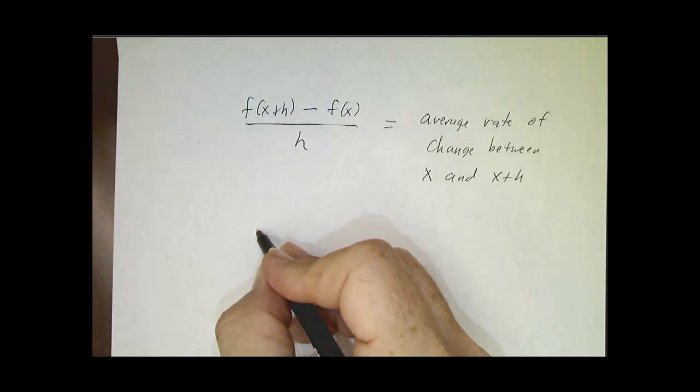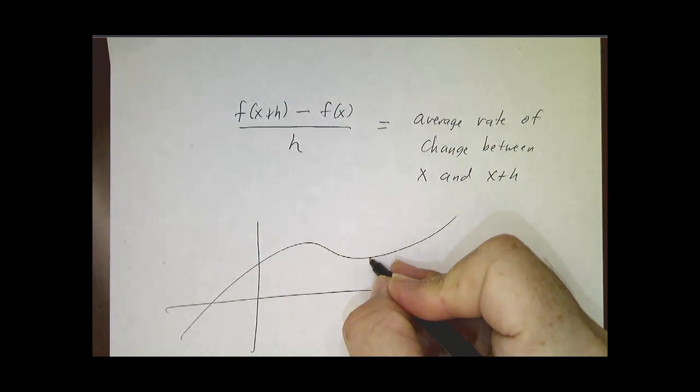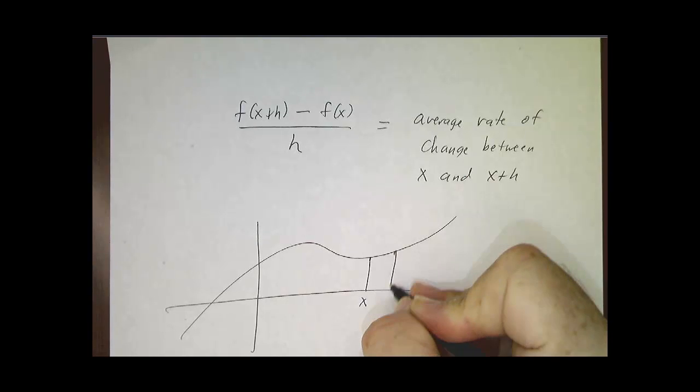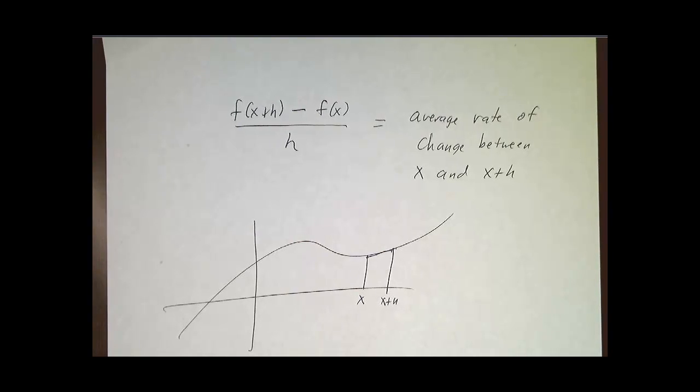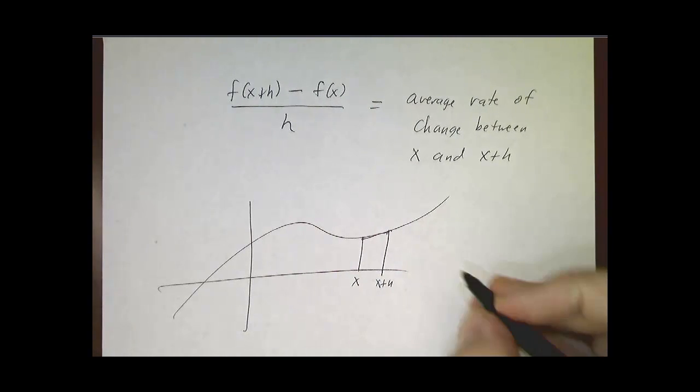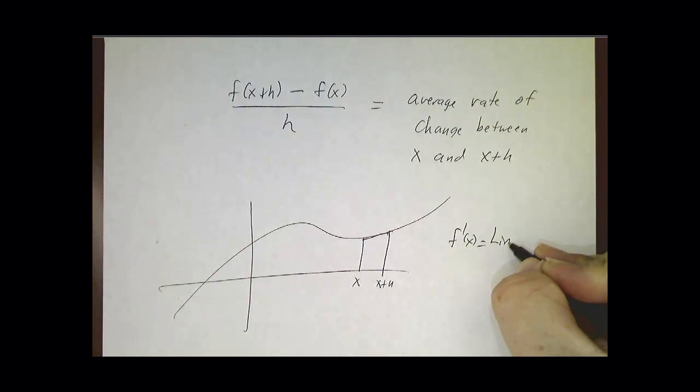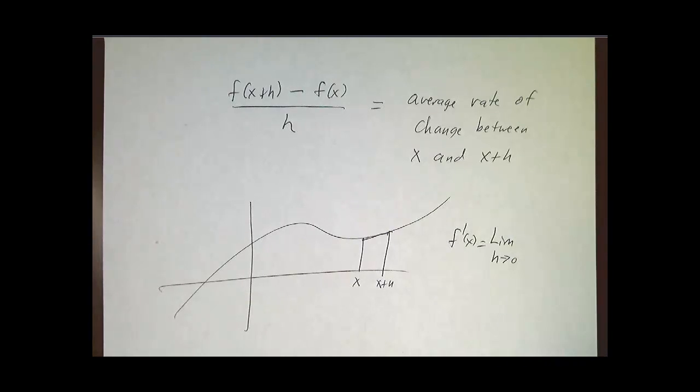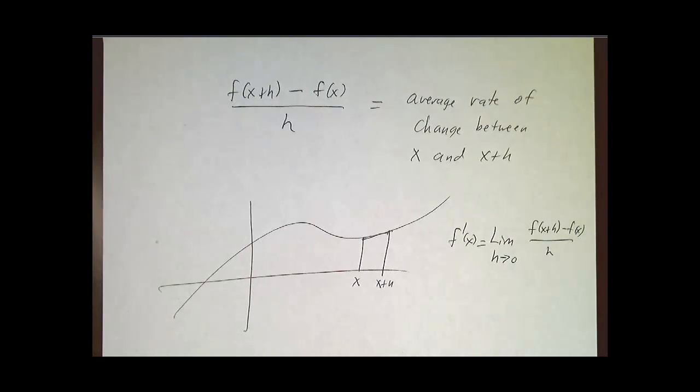So we've got our curve, here's x, and here's x plus h, and we figure out what the rate of change is in between, and that's a slope. And then if we want the change right now, we take a limit. We average over shorter and shorter and shorter periods of time. And we call that our derivative.